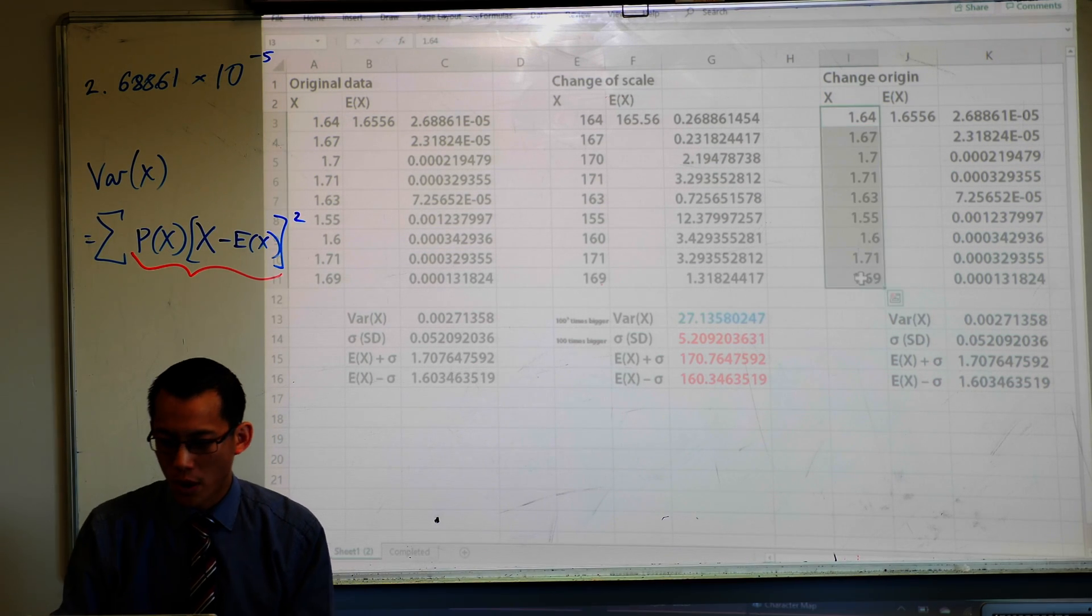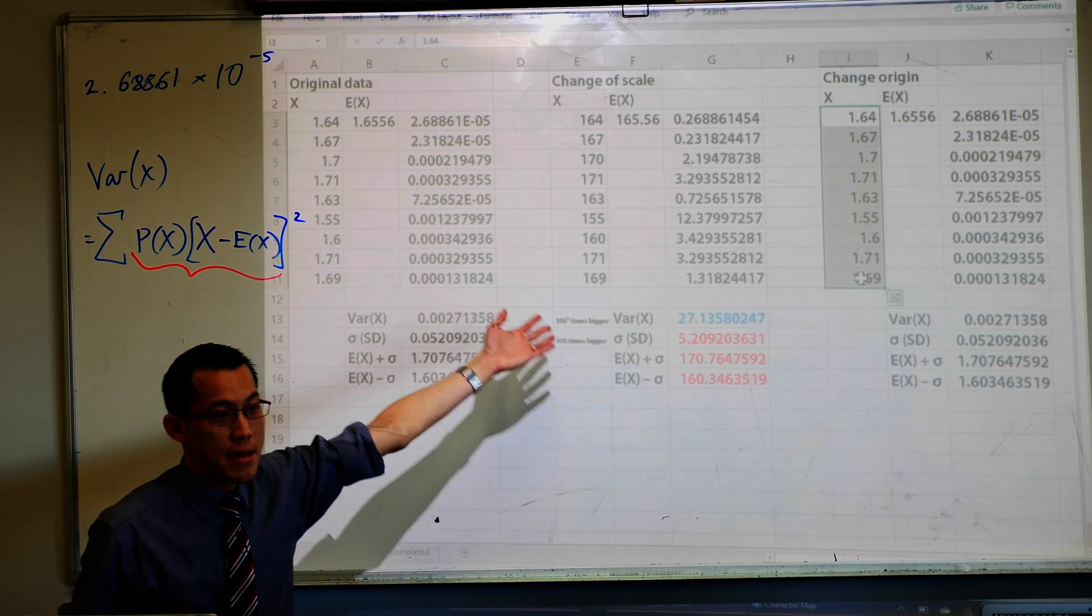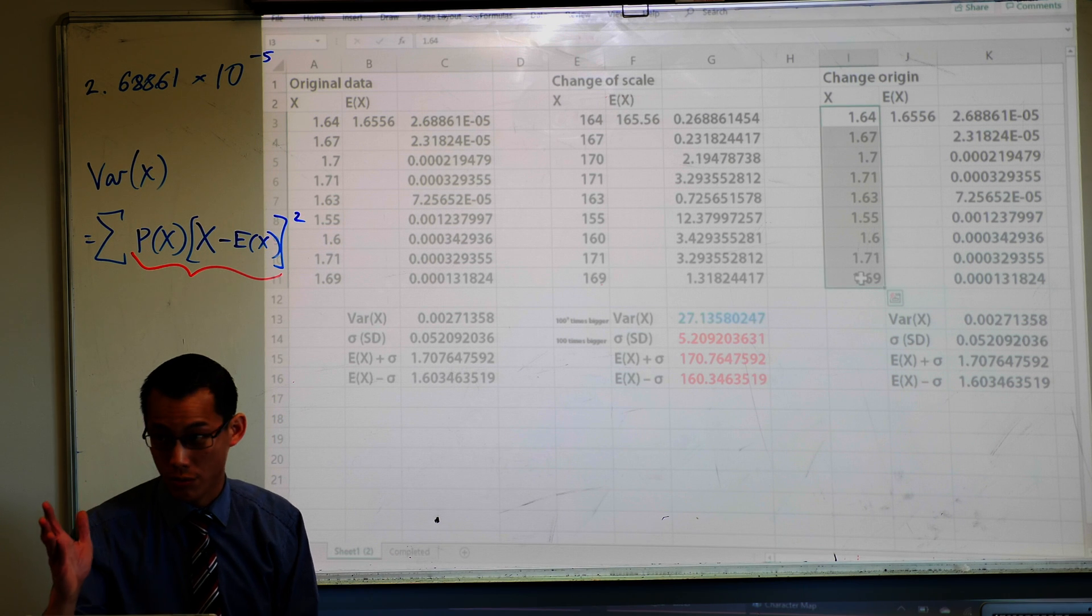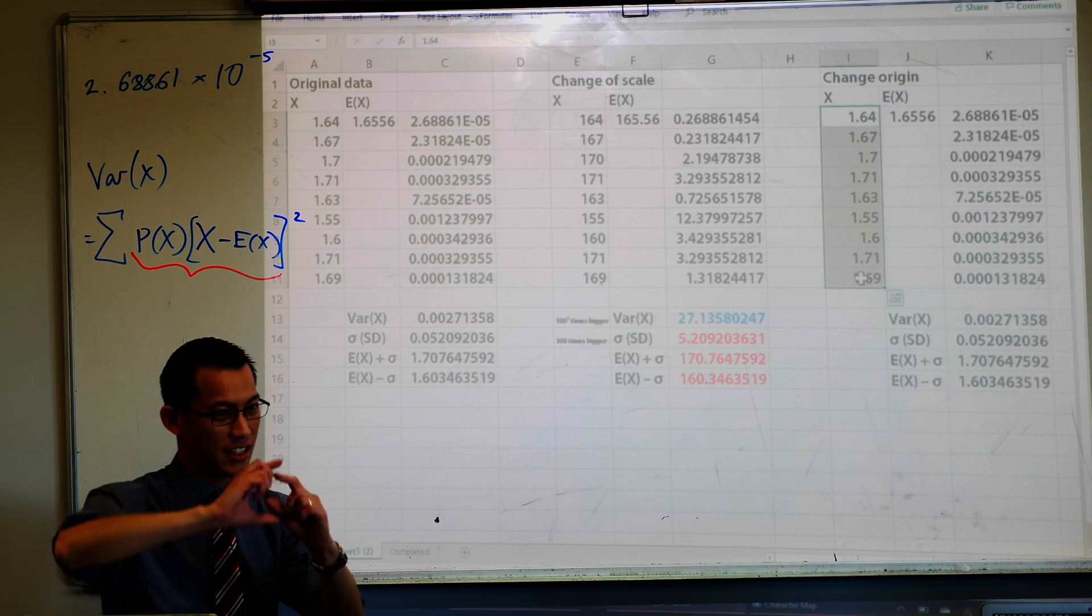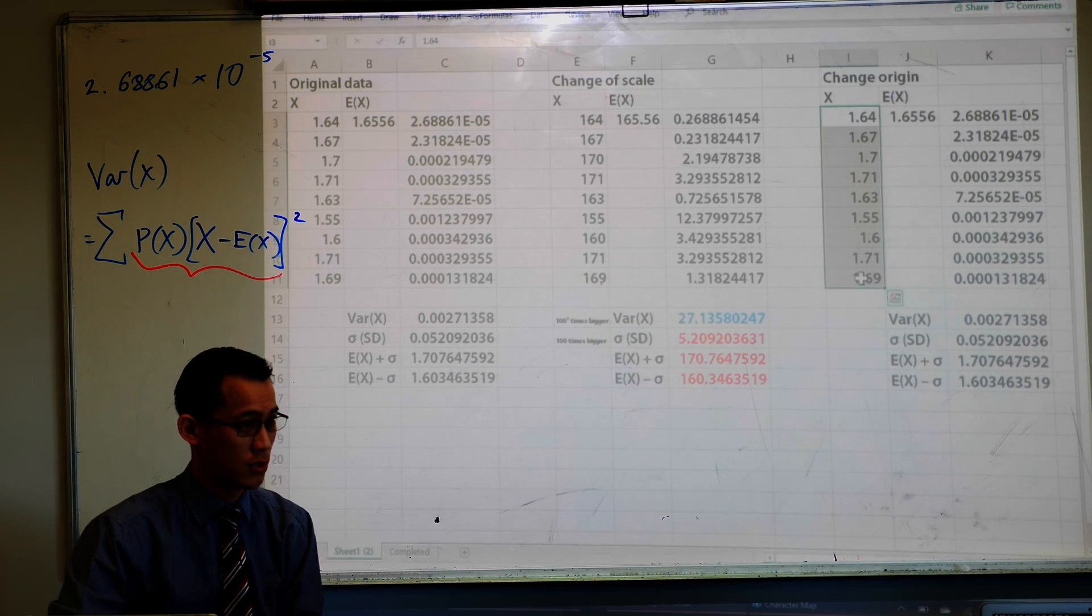So for instance what I might do is I might say, oh you know what I measured all of your heights and you were all wearing shoes. Every single one of you was wearing shoes and I'm just going to magically guess that everyone's heel was say two centimeters tall, okay?